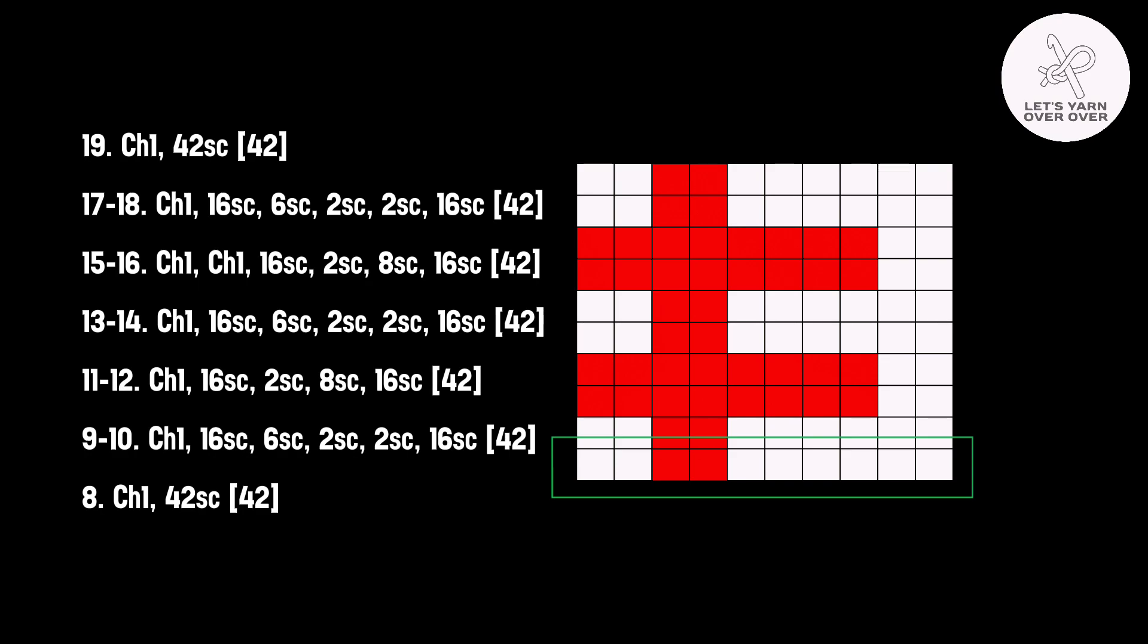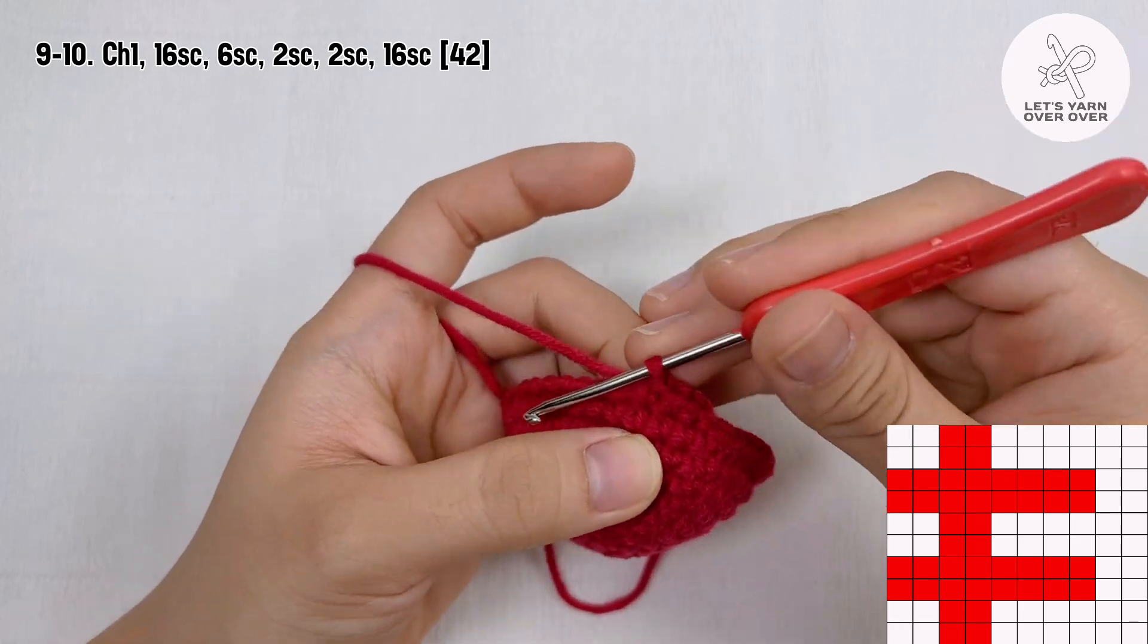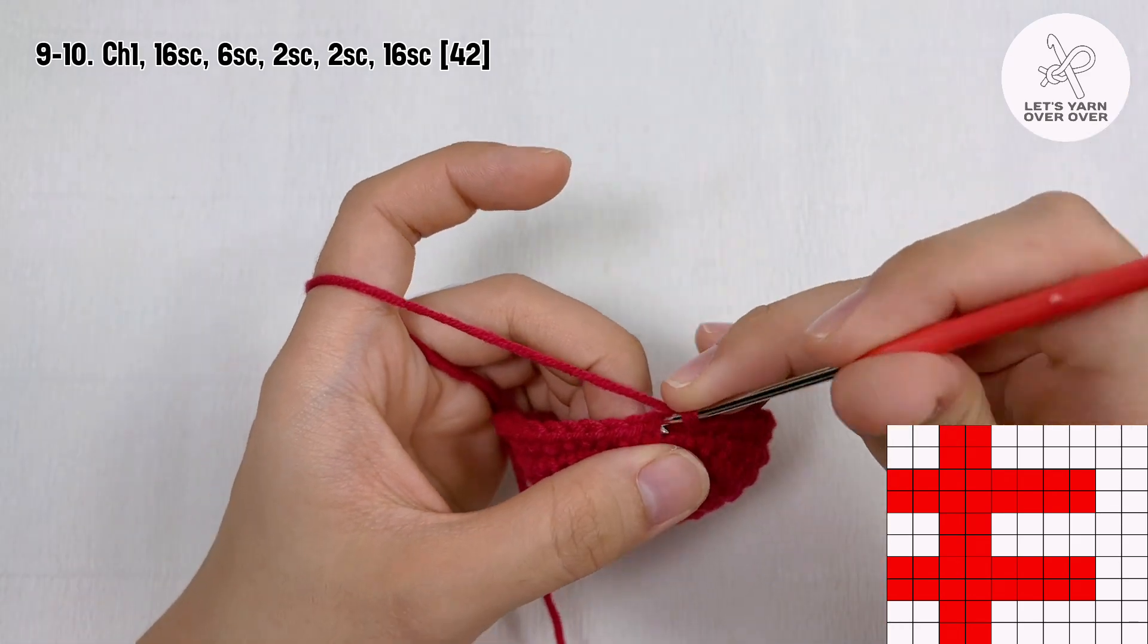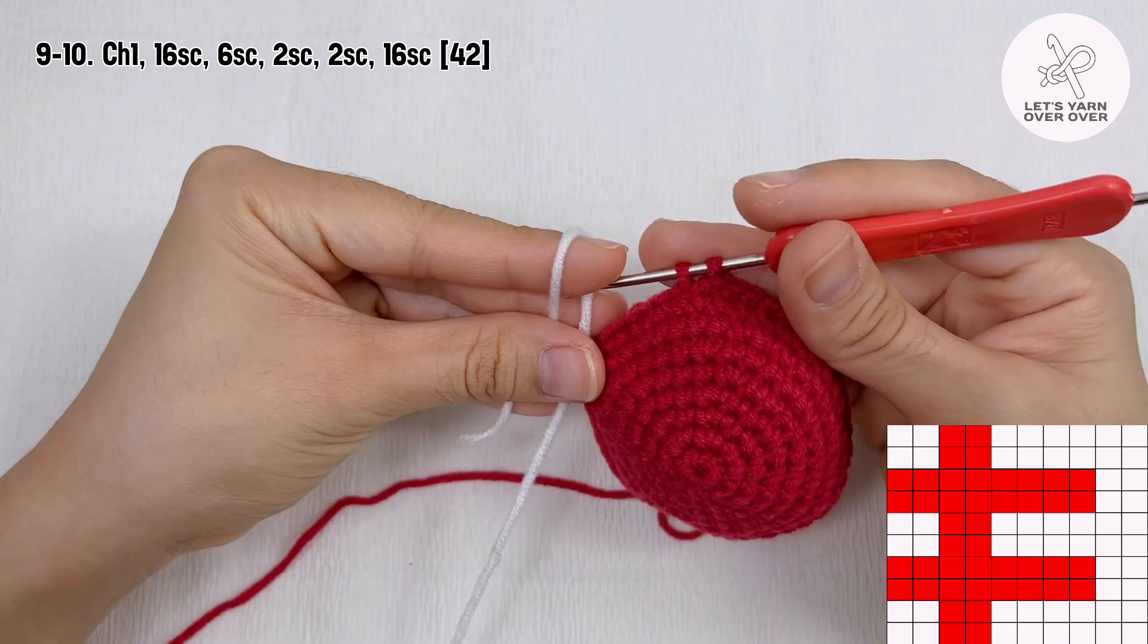6 single crochet in white, 2 single crochet in red, 2 single crochet in white, and then 16 single crochet in red. The total number of stitches are still 42. From round 10 to 18, you will follow the same formula to create the logo.